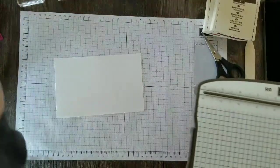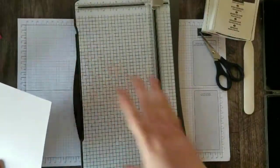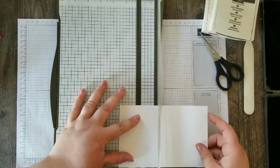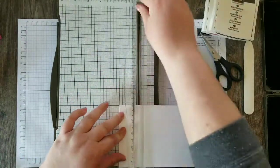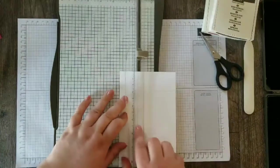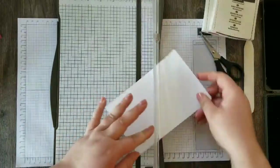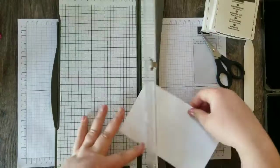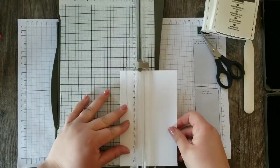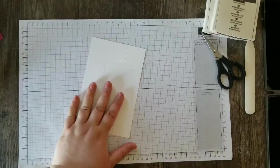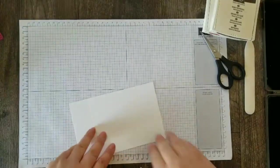So let me just grab my trimmer here. And we're going to go, like I said, one and a half and turn another one and a half. And we're just going to score all the way around each side of the card stock here.